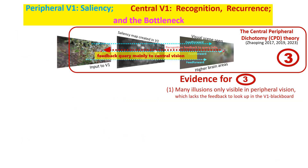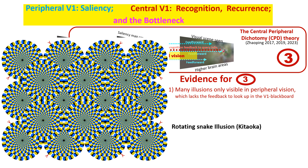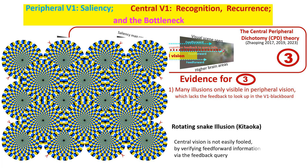Evidence for the central-peripheral dichotomy theory includes many illusions that are only visible in peripheral vision. You see illusory motion in a static image, but not where you fixate your gaze. Peripheral vision lacks the feedback to look up the V1 blackboard, so it can be easily fooled by information-impoverished feedforward signals. Central vision is not fooled because it has the feedback query to verify feedforward signals.